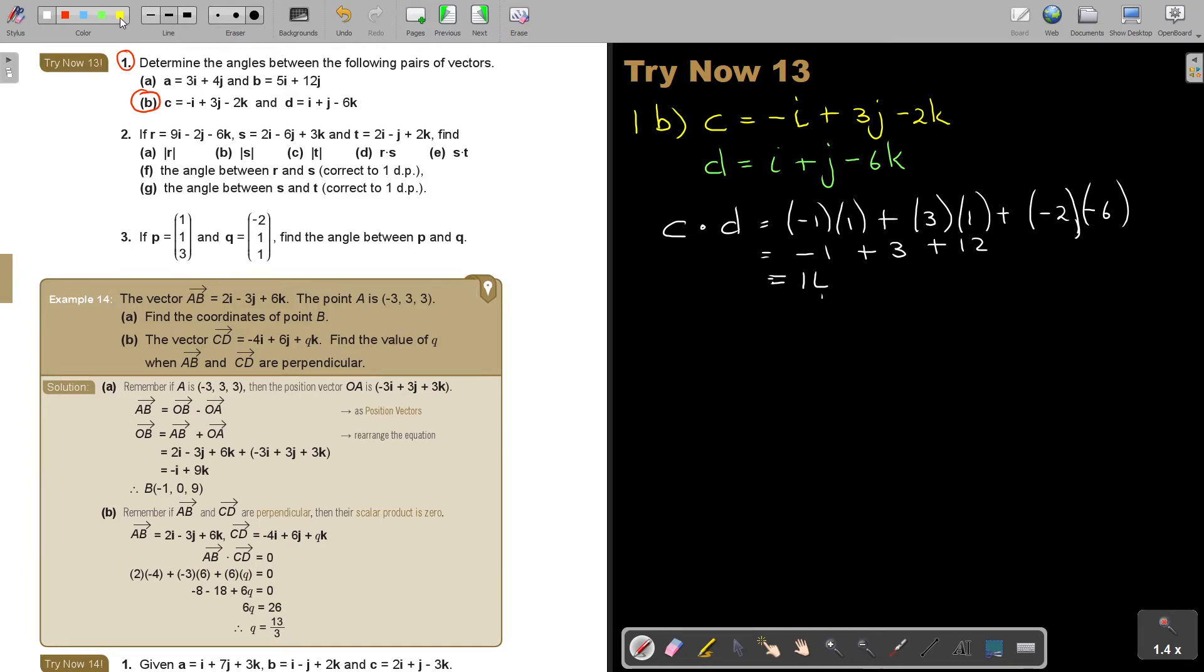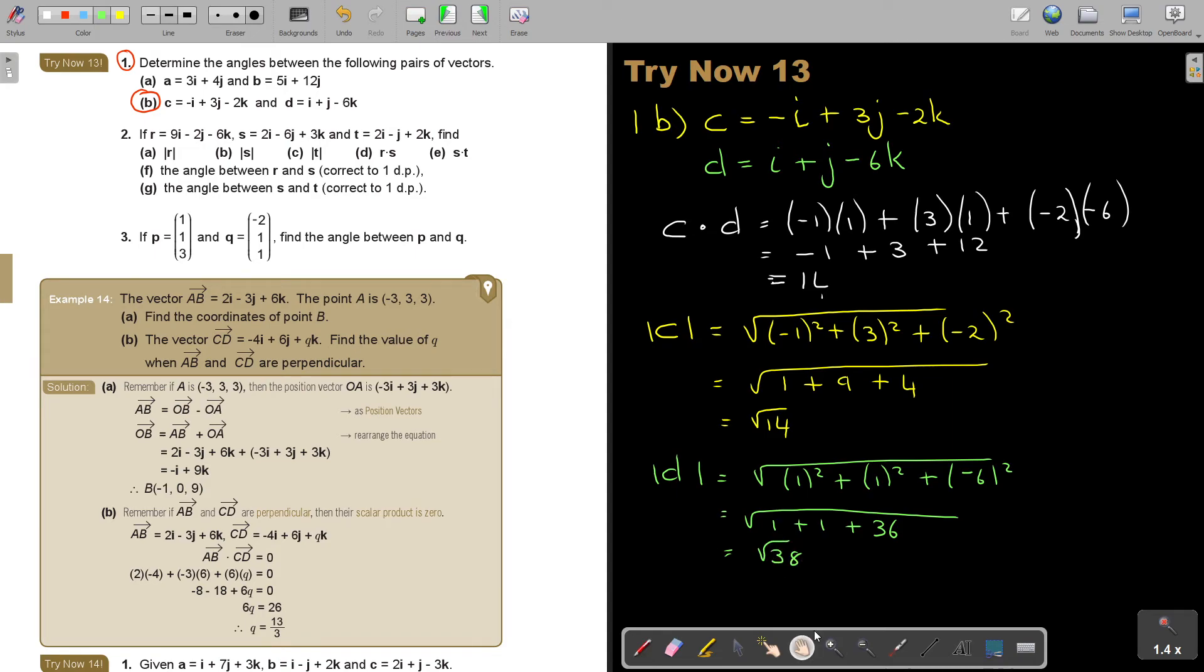Now I'm going to find the magnitude of C. Pythagoras theorem. So it's negative 1 square plus 3 square plus negative 2 square. So it's going to be 1 plus 9 plus 4. So it's going to be the square root of 14. And then it's going to be the magnitude of D. So it's going to be 1 square plus 1 square plus negative 6 square. And that's going to be 1 plus 1 plus 36. So it's going to be the square root of 38.